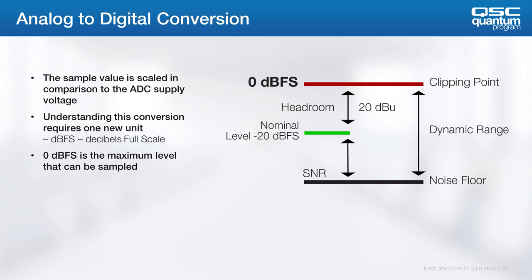If you look at plus 4 dBu nominal, as compared with plus 24 dBu clipping, if we leave 20 dB of headroom in our digital system — with zero dBFS being clipping — our nominal level is going to be negative 20 dBFS. If you're a Biamp user and you set that to zero, you've essentially eaten all that headroom because your nominal level is essentially zero dBFS. In Q-SYS meters, our nominal becomes negative 20 dBFS.